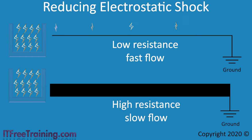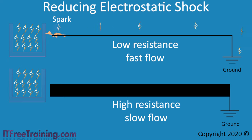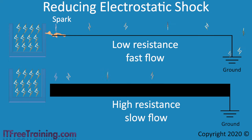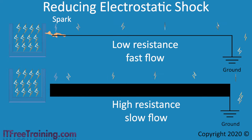When the object comes close enough, the static electricity will pass over the material attempting to reach ground. The problem occurs if this happens too quickly — a spark can be created between the object and the material. Even if a spark does not occur, too much static transfer at once can damage electrical equipment. The component is more likely to be damaged if the static electricity travels quickly. Remember, static electricity is just an imbalance of electricity attempting to balance itself. So, if you put an electronic component on an anti-static mat and then you touch it, the static electricity is wanting to go to ground. The anti-static mat in between slows down this process so it is less likely the component will be damaged.